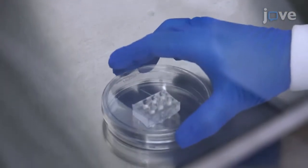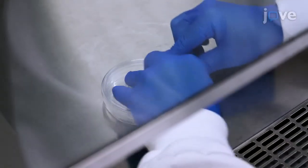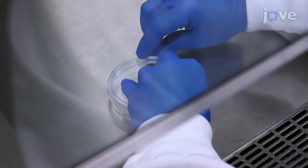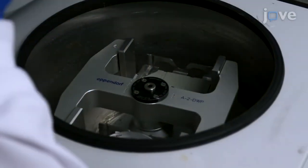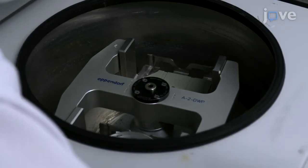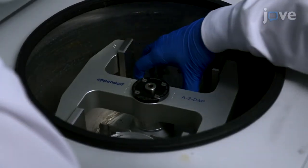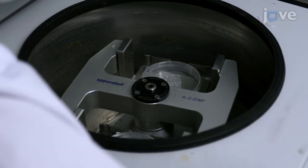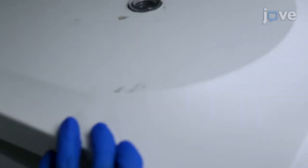Use the lid to cover the wells and apply paraffin film to seal the dish. Centrifuge the dish at 1550 times G for one minute in a centrifuge outfitted with a plate spinner adapter.